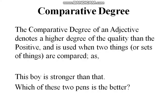Look at the examples: 'She is a good girl', 'I am strong'. Then we have comparative degree. The comparative degree of an adjective denotes a higher degree of quality than the positive. It is a step above the positive degree and is used when two things or sets of things are compared.